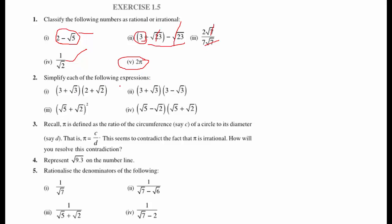Now, simplify each of the expressions. Here you will use the identities discussed in the previous slides. This is of the form (a plus b)(c plus b). Here you will apply (a plus b)(a minus b). And this is (a plus b) whole square. Again, this is (a plus b)(a minus b). You will solve these numericals using those identities.